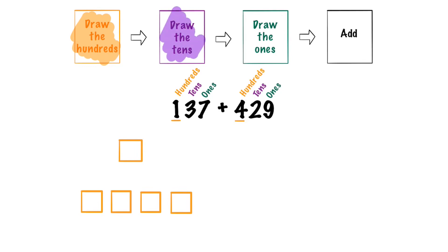Step two says draw the tens. On our first number we have a 3 in the tens place which means we have three tens. Our next number has a 2 in the tens place which means we have two tens. Next we need to draw the ones. On our first number we have a 7 in the ones place so we need seven ones. Our next number has a 9 in the ones place so we need nine ones.